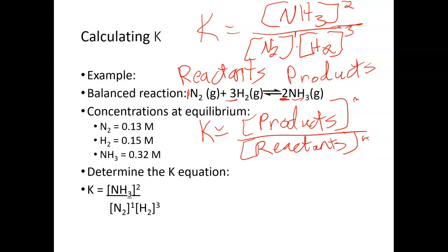If we then plug our values into the K equation, so that's 0.32 molar for my NH3, 0.13 molar, 0.15 molar. So notice the 0.32 molar is going to be squared. This 0.13 is just to the first power, so it's just one time. 0.15, you're going to be cubing that.